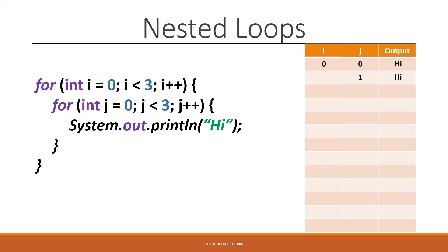We go back up and add one more to j, then check if j is still less than three — it is, so we print "high" one more time. We go back up, increment j to three, and when we check if j is less than three, it's no longer true. So we jump to the end of the inner loop. Since there's nothing after it, we reach the closing bracket of the outer loop.